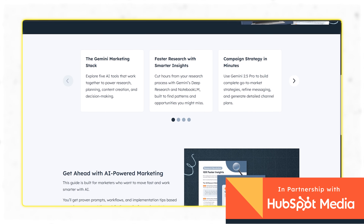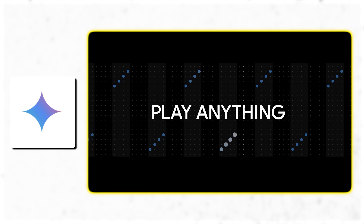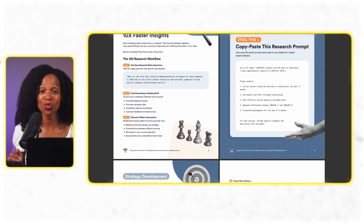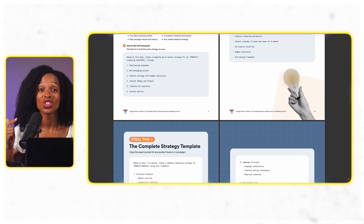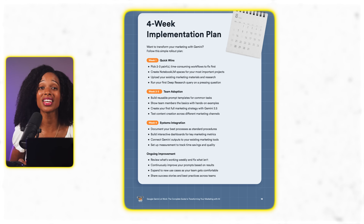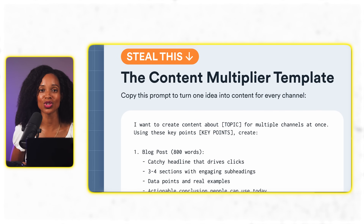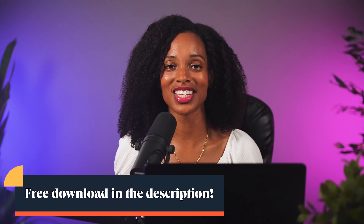If you're excited about leveraging Gemini for strategic business work, especially for marketing, I recommend taking a look at this free ebook from HubSpot called 'Google Gemini at Work.' This guide walks you through how to leverage the five-tool Gemini marketing stack — including Deep Research, Notebook LM, Gemini 2.5 Pro, Image Generation, and Learn About — for use cases like research, strategy, and content creation. You'll get prompts you can copy, paste, or customize, plus a four-week implementation plan. My favorite section is the content multiplier template, which shows you how to turn one piece of research into multiple marketing assets.